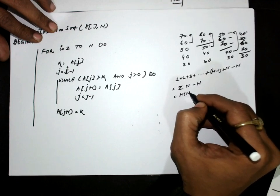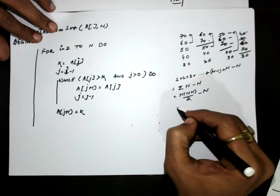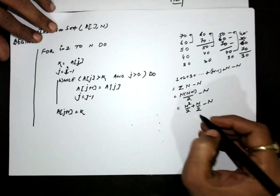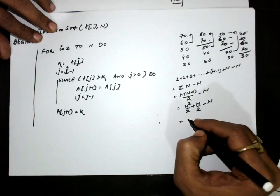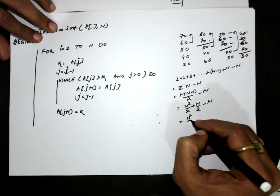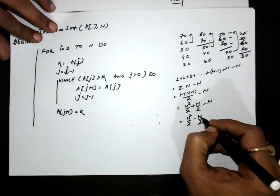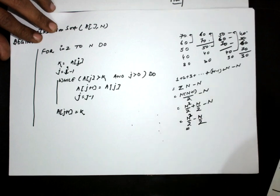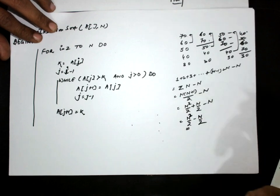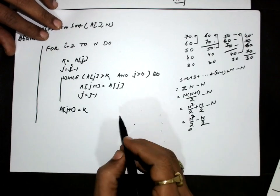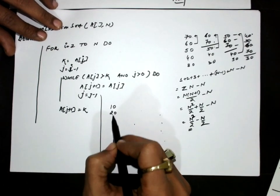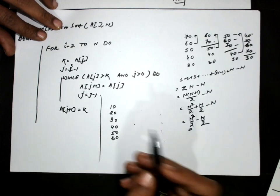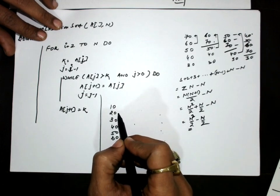Simplifying: n(n+1)/2 minus n equals n²/2 plus n/2 minus n, which equals n²/2 minus n/2. The dominating factor is n², so the complexity is written with respect to n². Now let us find out what notations can be used by looking at the best case of a sorted input array.